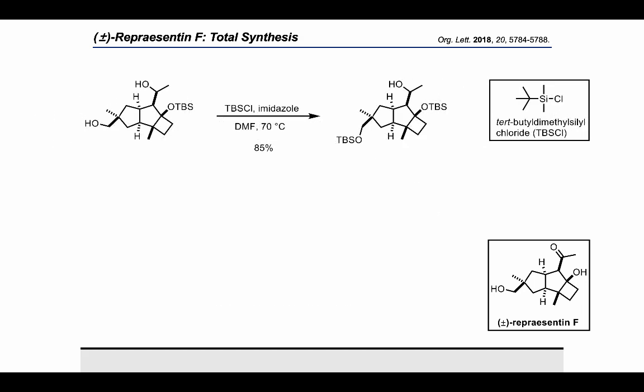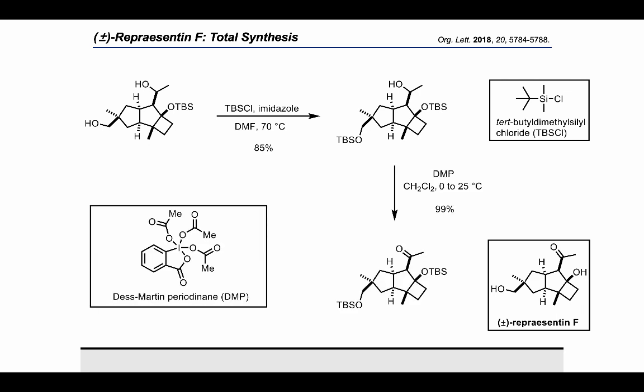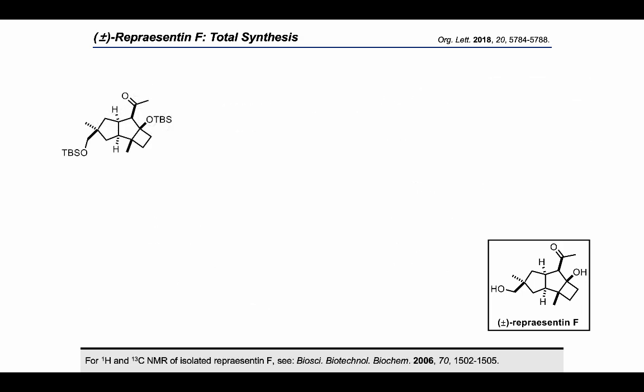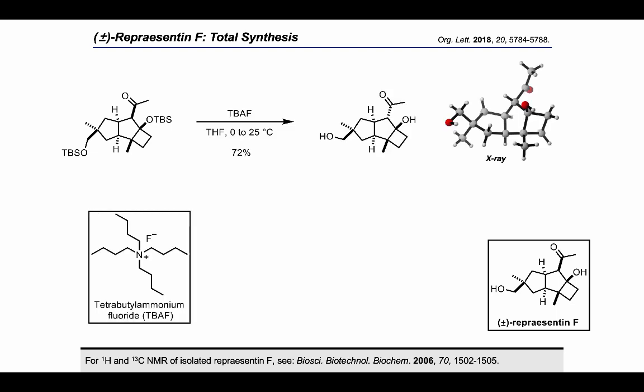Selective protection of the primary alcohol with TBS chloride, followed by oxidation of the secondary alcohol with Dess-Martin periodinane, afforded the corresponding ketone in good yield. At this stage, we only needed to remove the TBS protecting groups in order to obtain the natural product. Removal of the TBS protecting groups with TBAF occurred with concomitant epimerization at the ketone alpha position, yielding the final product in 72% yield and with its structure determined by X-ray.